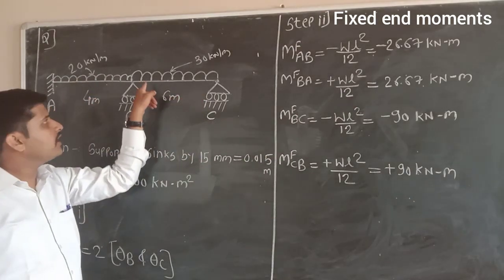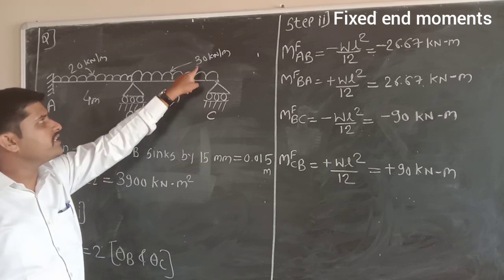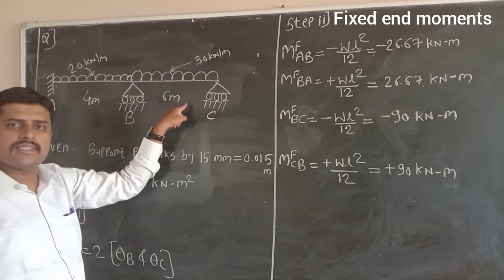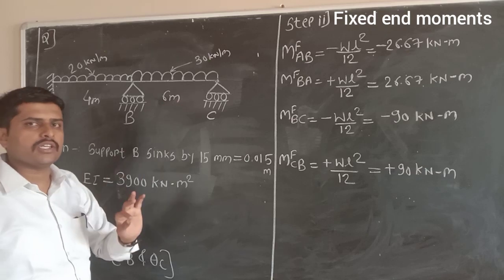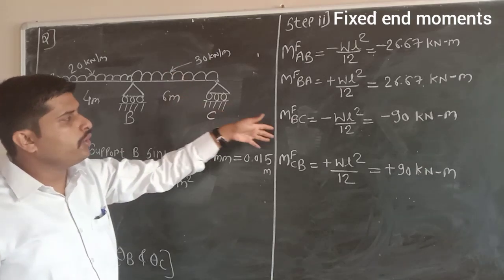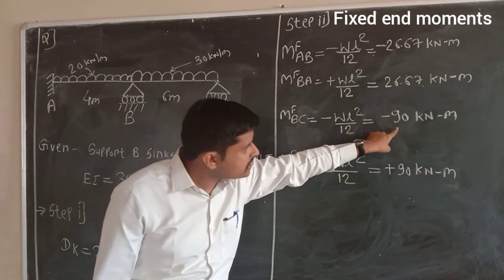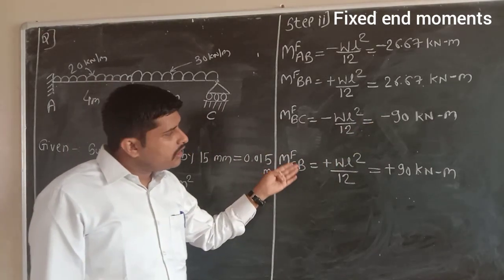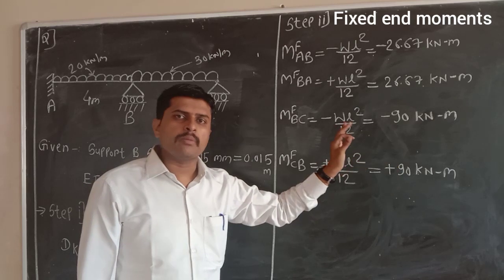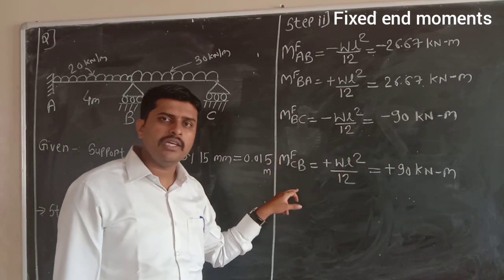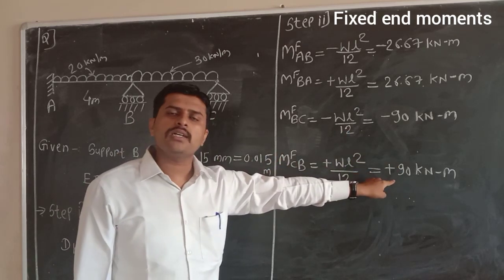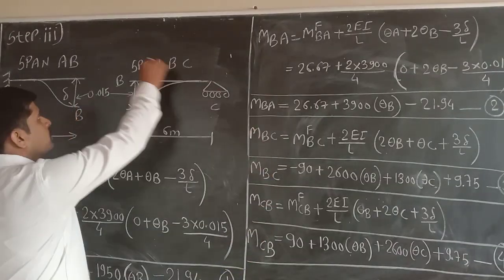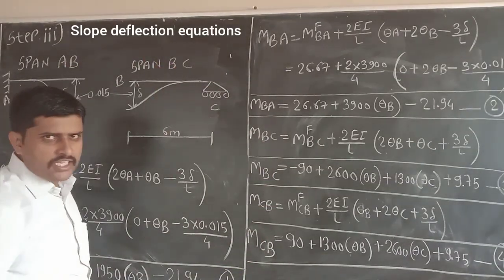For span BC, there is UDL having intensity 30 kN/m and length 6 m. Putting in the values of W and L, we get minus 90 kNm. Similarly, the value of 90 kNm remains the same for span CB with opposite sign: plus 90 kNm. We now solve step 3, that is, the slope deflection equations.